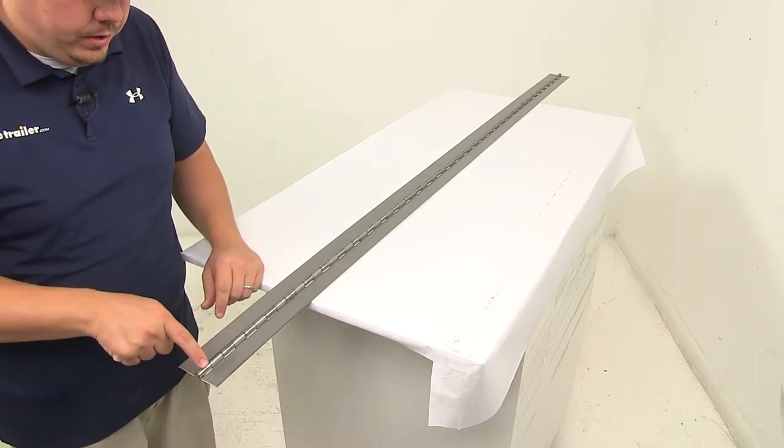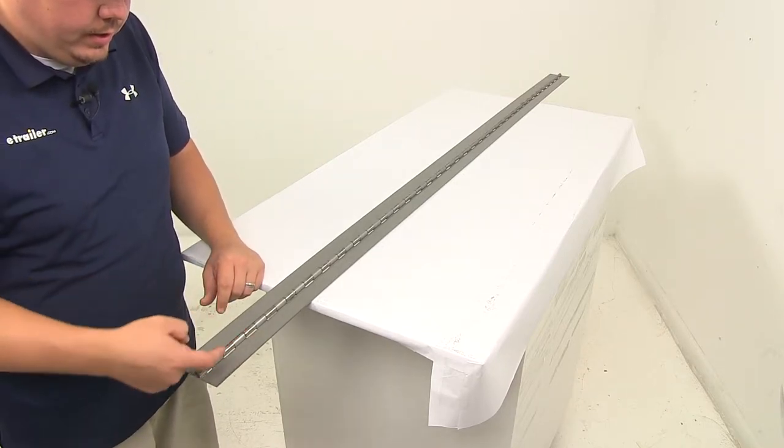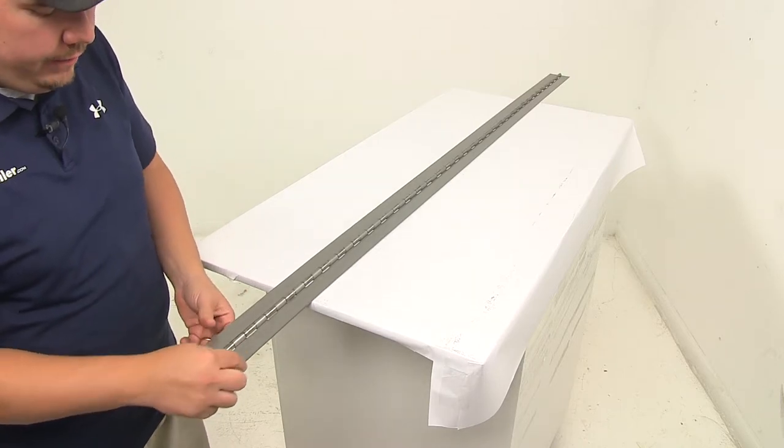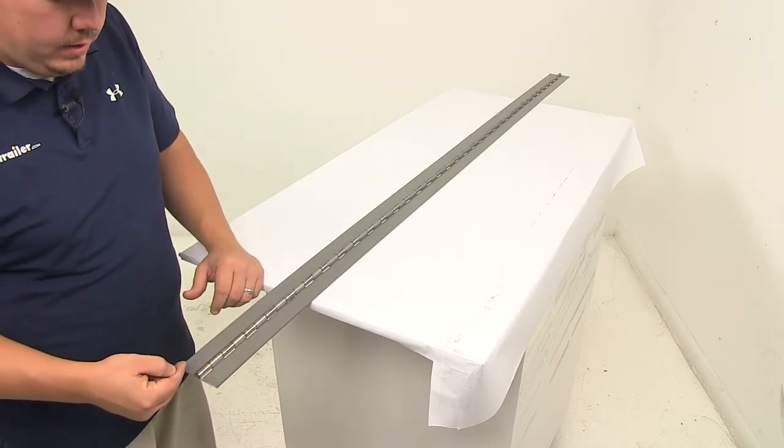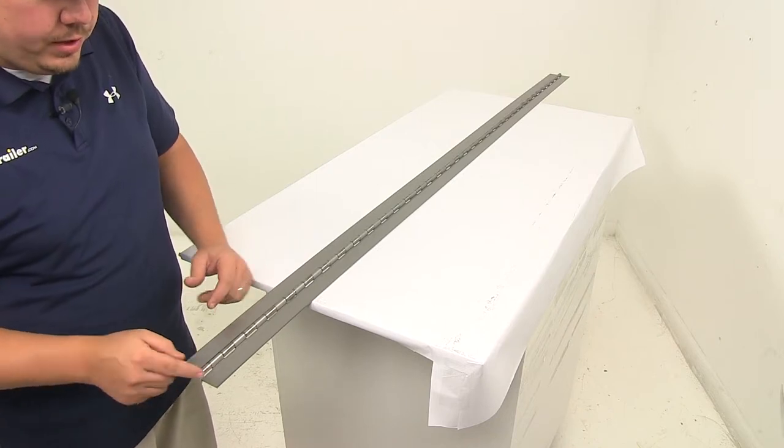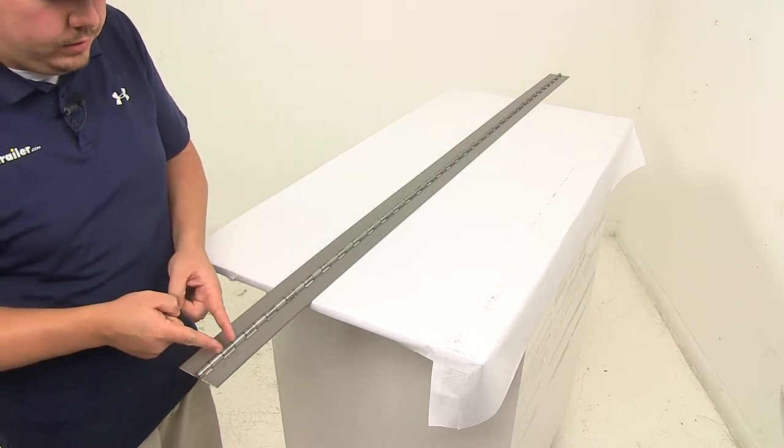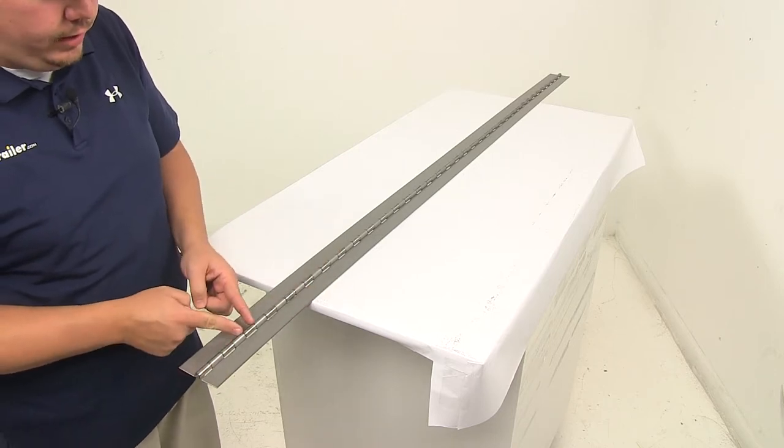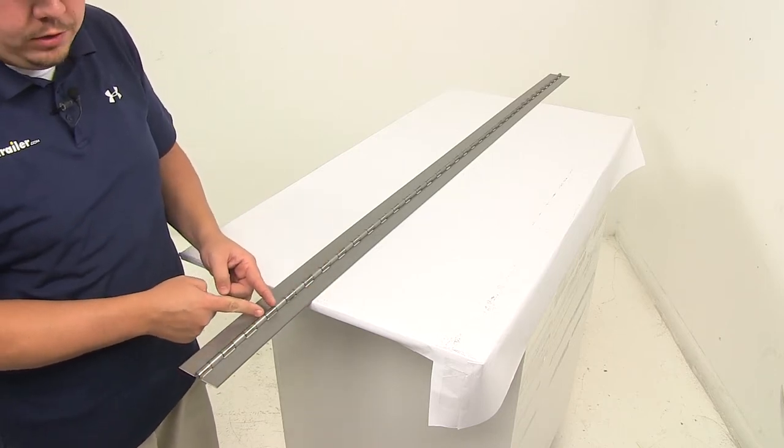And then the knuckle length. Each one of these individual pieces right here, so you're going to have your leaves right here. The leaves have a tab on it that wrap around that pin, and that portion that wraps around is the knuckle. This particular hinge is going to feature a knuckle length, each one of these is going to measure one inch long.